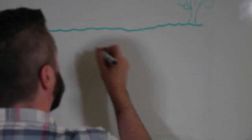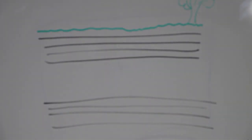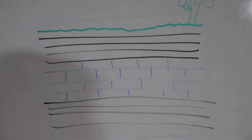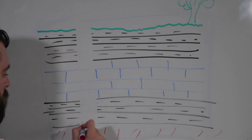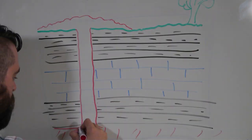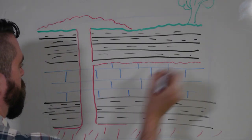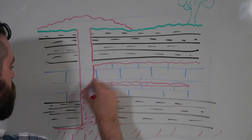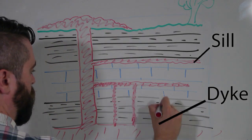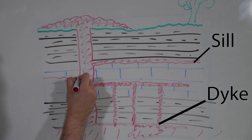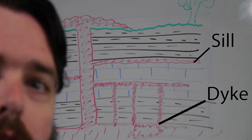Igneous rocks that intrude along the bedding plane of the surrounding or country rock are called sills, which is an old word for shelf. Intrusions that cut across the bedding of the country rock are called dykes, which is an old word for wall. Cross-cutting relationships also tell us that the intruding rock is younger than the country rock, because the country rocks had to be there and lithified for the intrusion to cut across them. Dykes and sills don't have to be made of igneous rock — they can also be made of sediments and metamorphic rocks as well.